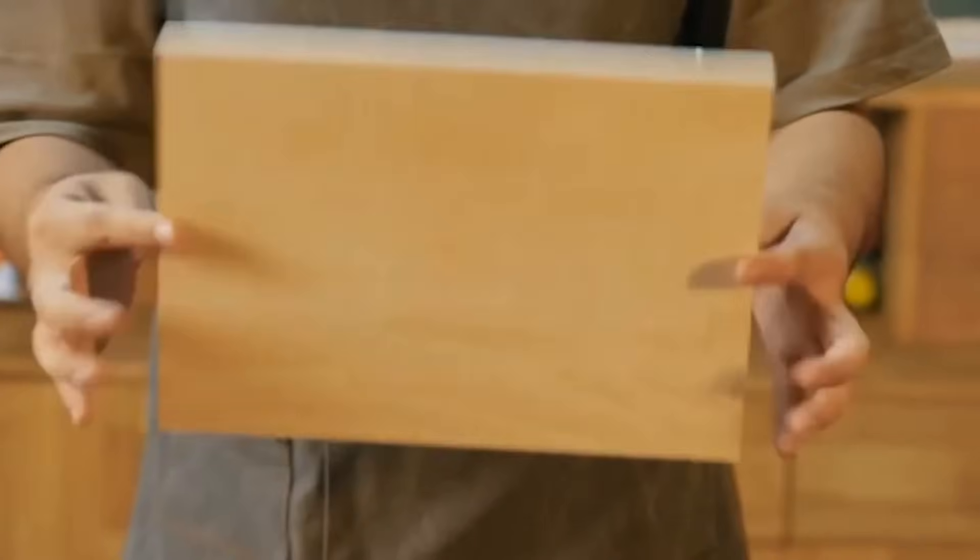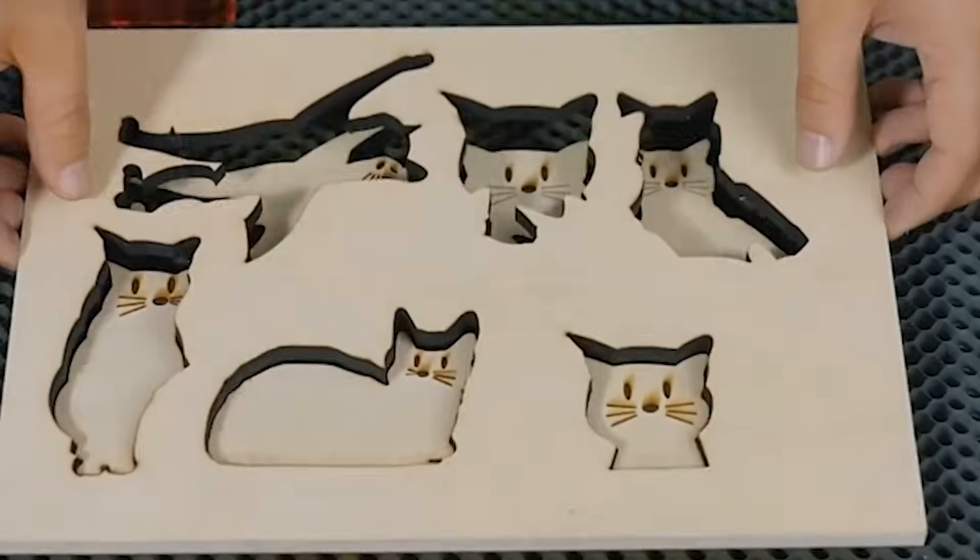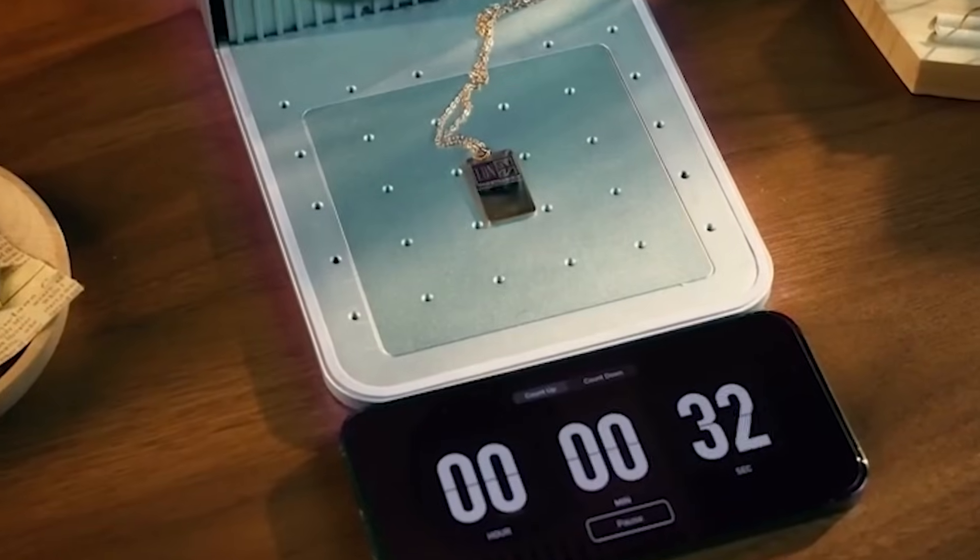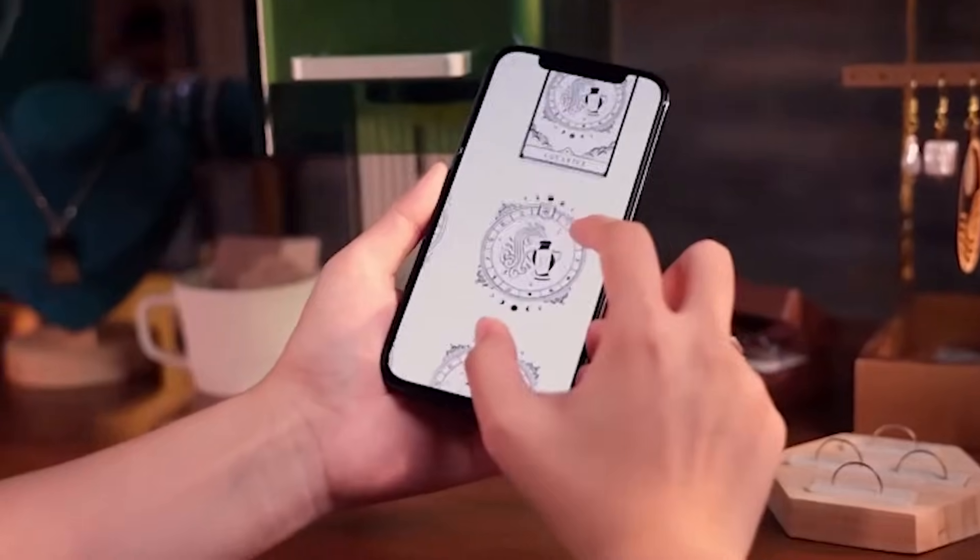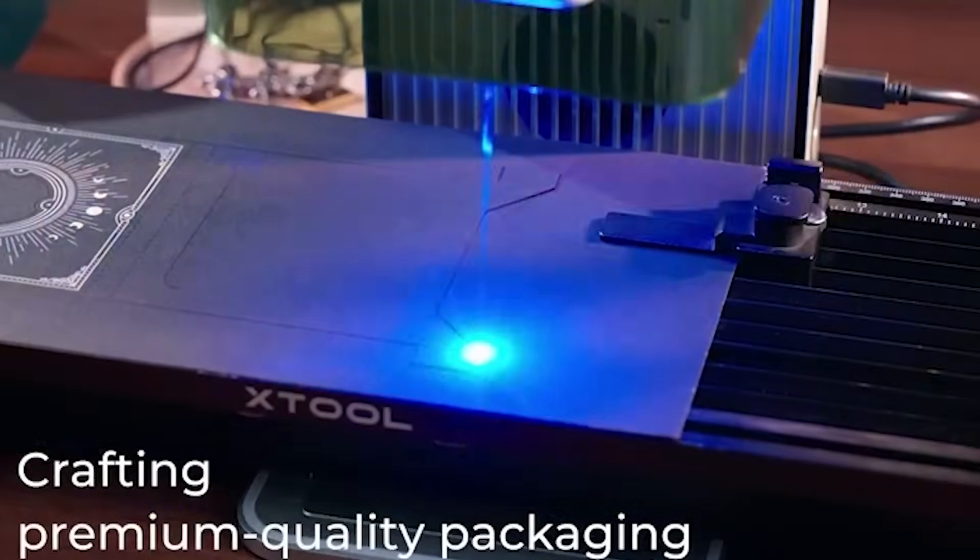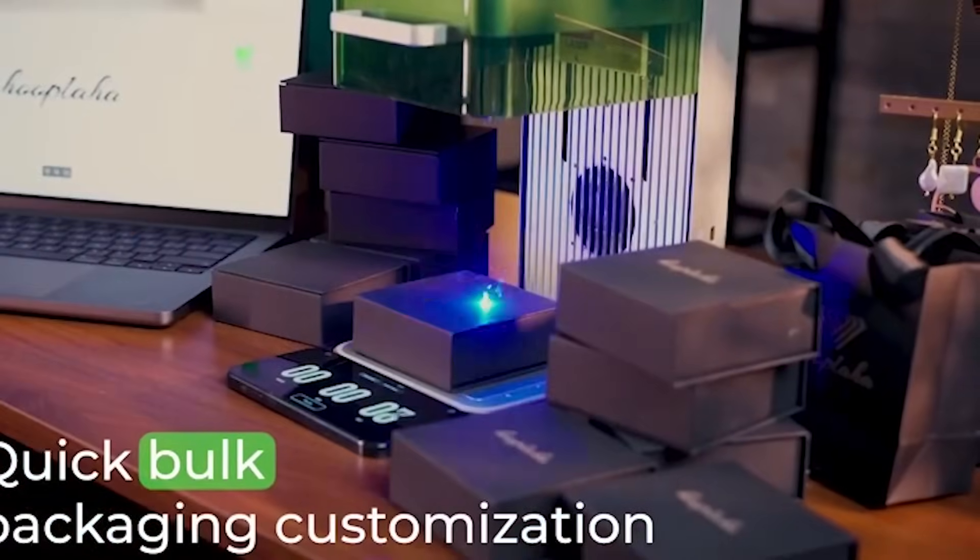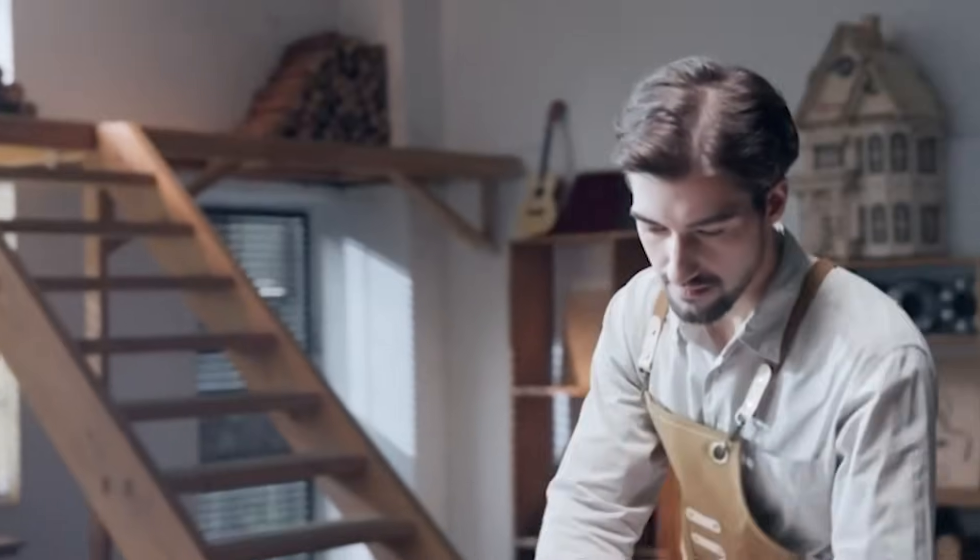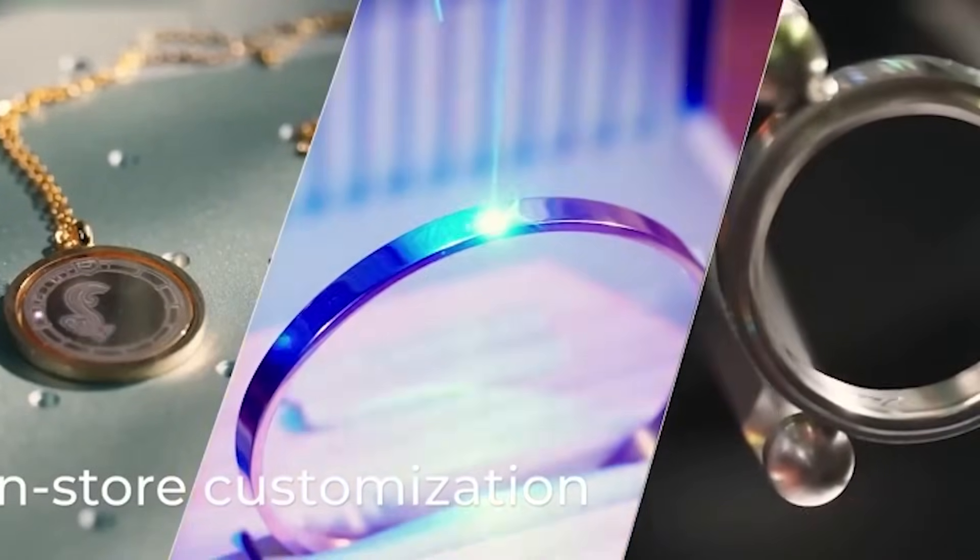Laser cutters: fire in perfect lines. Few machines captivate the human eye like a laser cutter. A beam of pure light slices through metal, wood, or acrylic with flawless precision. The process looks like magic, an invisible force tracing shapes, cutting designs, and leaving behind smooth, polished edges without even touching the material.